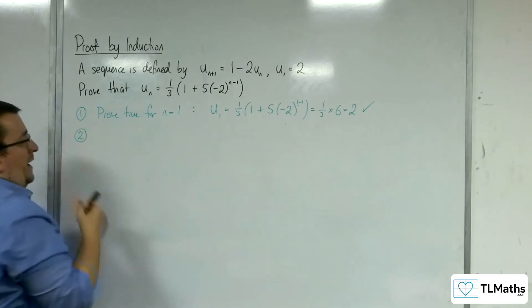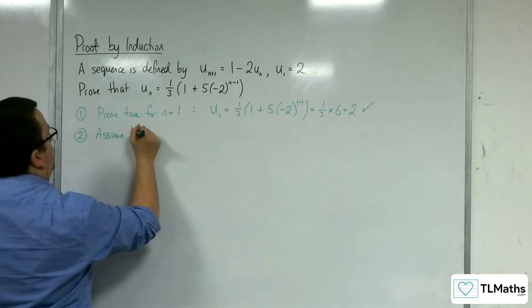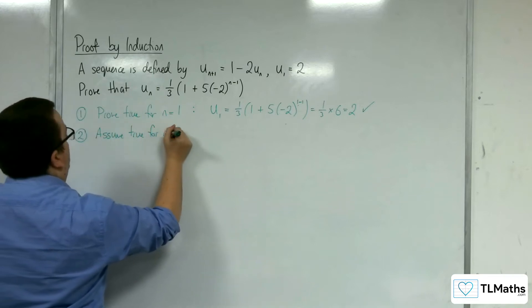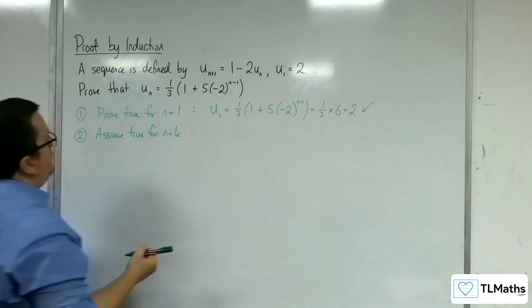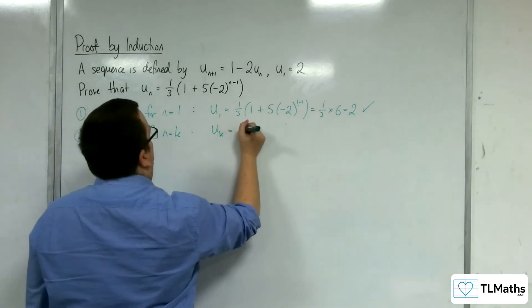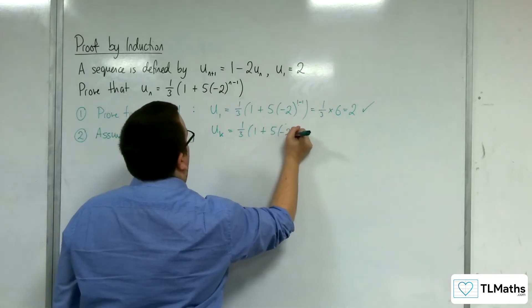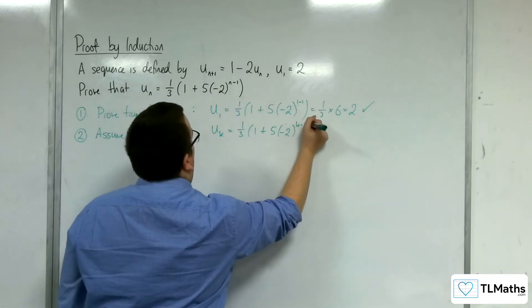So stage 2, we assume that it's true for n equals k. So we'll be saying that u_k is equal to one third of 1 plus 5 lots of minus 2 to the k minus 1.